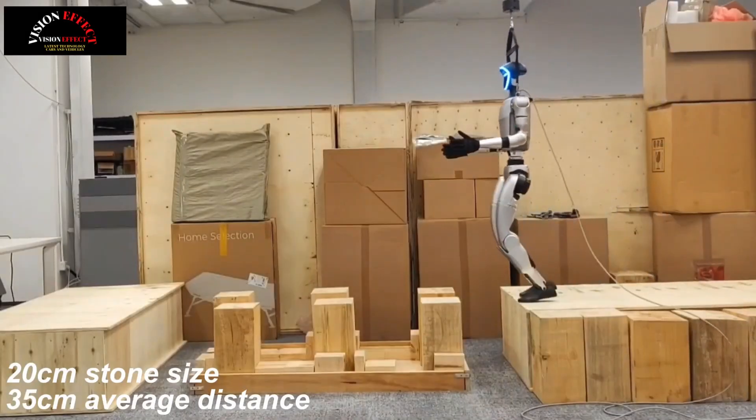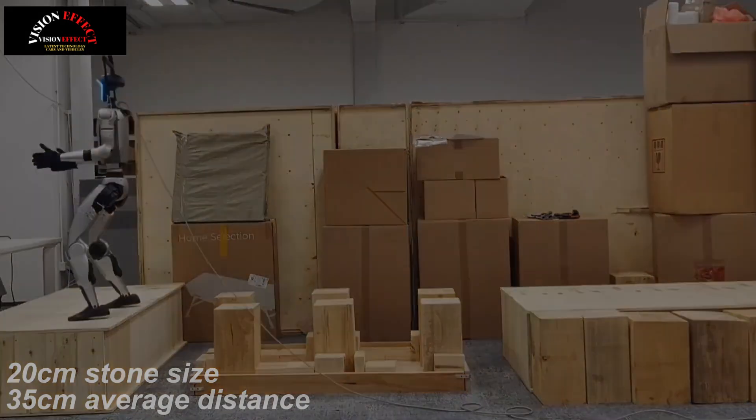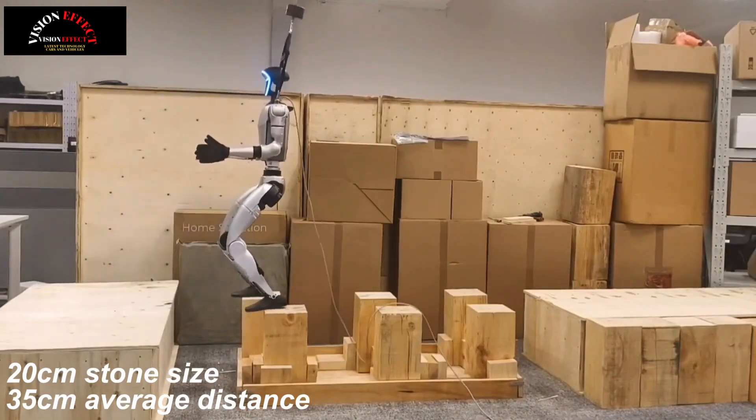Beam Dojo begins by introducing an instantiation-based foothold reward tailored for polygonal feet, with a double critique to balance the learning process between dense movement rewards and sparse foothold rewards.